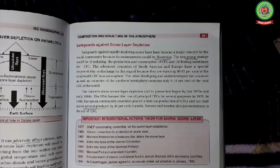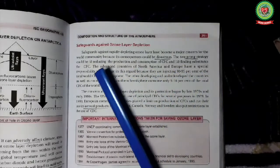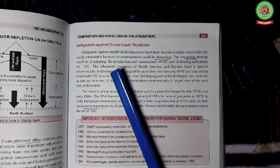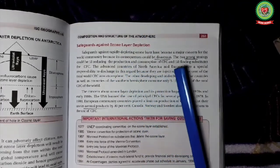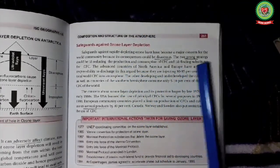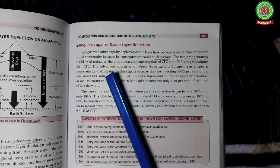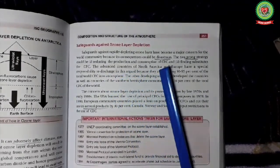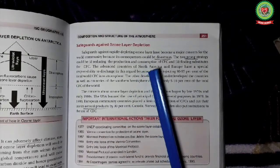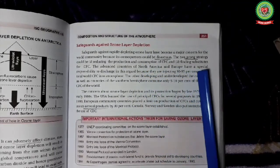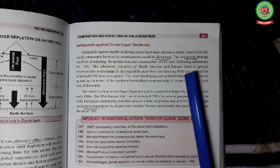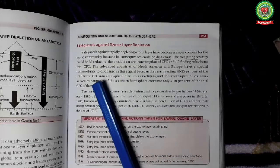Let us study the last topic for today, safeguards against ozone layer depletion. To safeguard the ozone layer, two prong strategies could be taken: one, reducing production of CFC and reducing its consumption; two, finding substitutes for CFC.